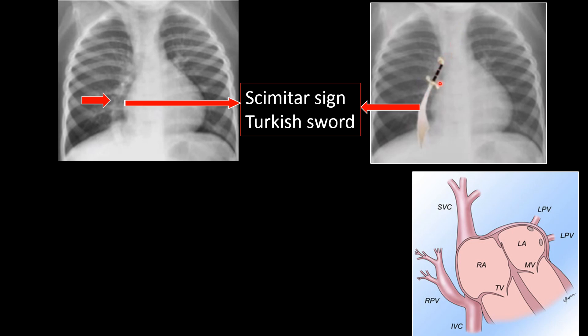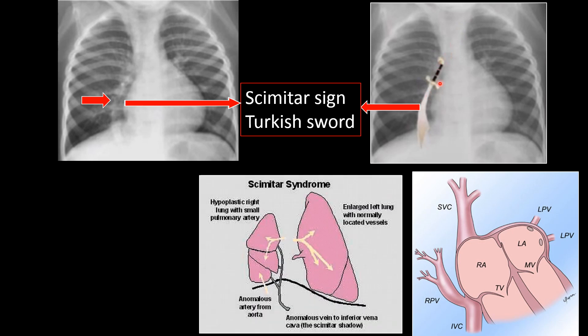This is also called scimitar syndrome. In scimitar syndrome, you have this anomalous vein draining into the IVC rather than the left atrium. The right lung is small, so it is also called hypogenetic lung syndrome, or congenital veno-lobar syndrome.